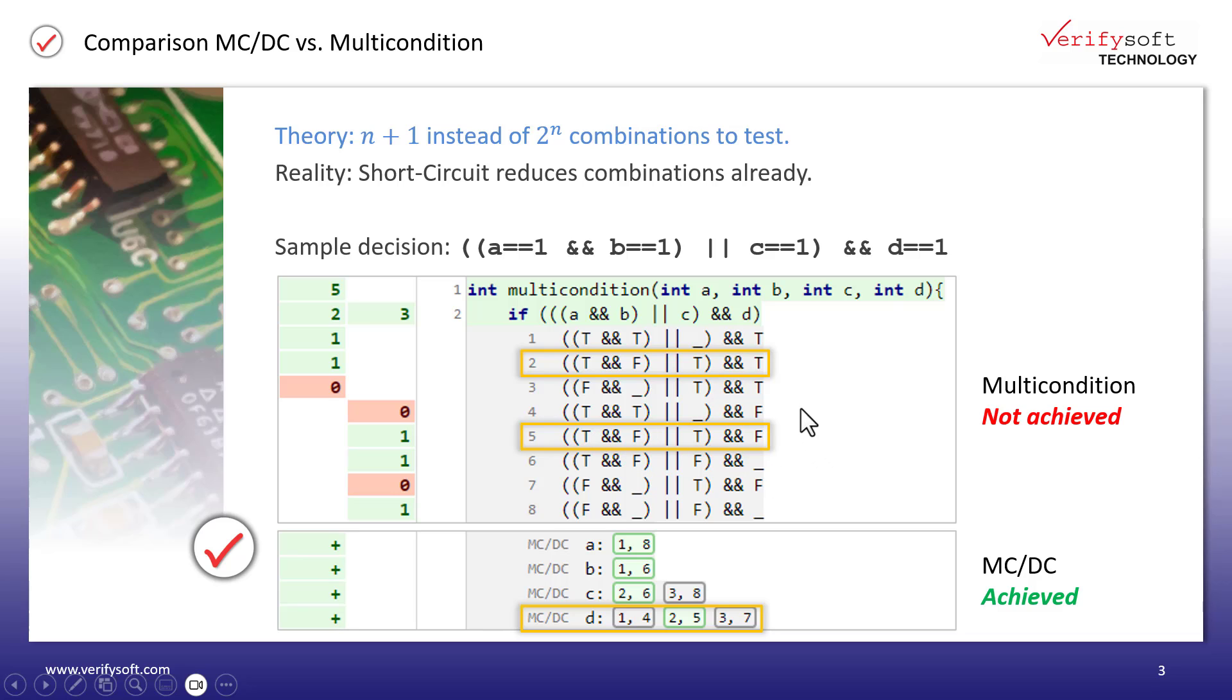Only the fourth condition D has changed its value from T to F. And the overall decision also changed its result. Here from true to false. The requirements for MCDC are met. A single condition must change. The others remain the same and the overall result must change its result. Two and five meet the requirements of modified condition decision coverage and we achieved MCDC coverage in total for this code example with only five tests.